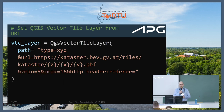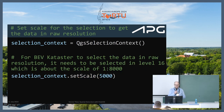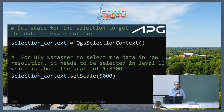We define our vector tile cache by the URL string, which comes from the docs at kataster.bev.gv.at. The important thing is to set the maximum resolution to 16, because that's where the data comes without any generalization. We then set a selection context — needed in the selection — and set the scale for selection to 5,000. Since zoom level 16 is about 1:8,000, we take 5,000 to be safe and get raw, non-generalized data.